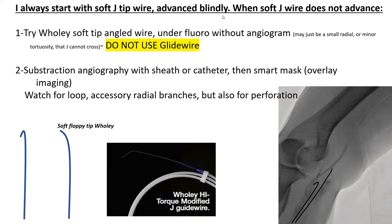If I encounter difficulty, this is when I go on fluoro, and first I make sure to advance a catheter close to the back of the wire to provide pushability. If, despite that, I cannot advance the J-wire, then I try to advance under fluoro, but without any angiography, a soft floppy-tipped woolly wire, a slightly angled woolly wire.